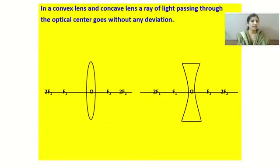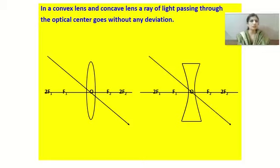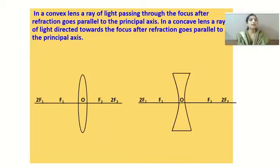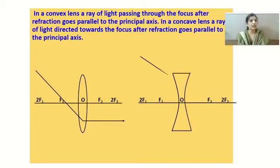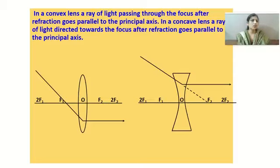The second ray we can use: a ray of light that passes through the optical center goes undeviated after refraction — this applies to both convex and concave lenses. The third ray: when a ray of light passes through the first focus F₁ of a convex lens, after refraction it is parallel to the principal axis. For a concave lens, a ray directed towards the focus after refraction becomes parallel to the principal axis.